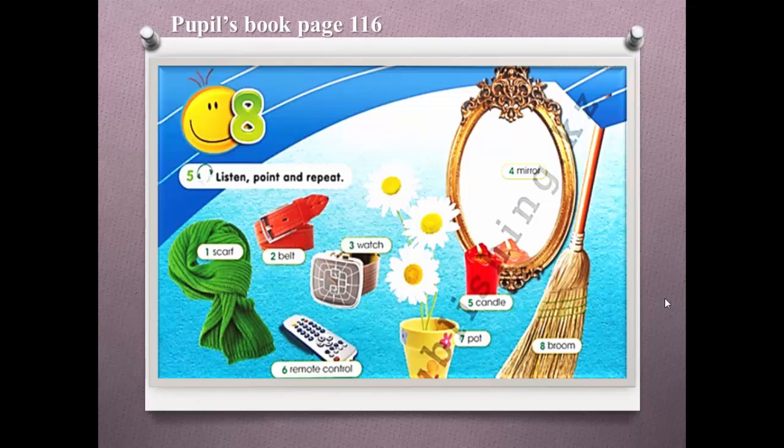Exercise 5, page 116. Listen, point, and repeat. Mirror, candle, remote control, pot, broom. Very good!